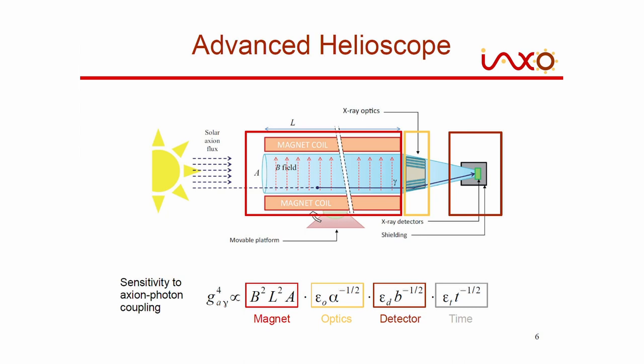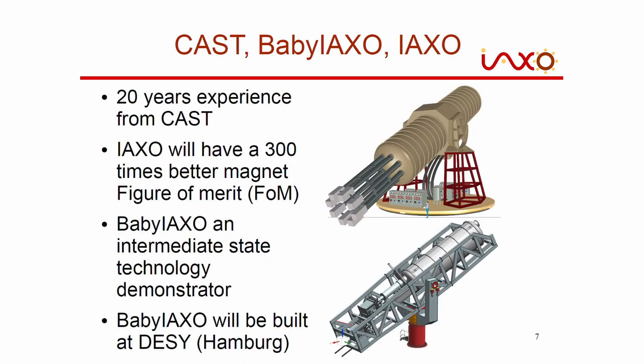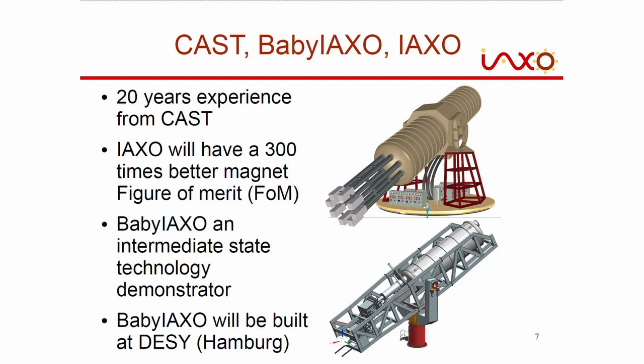Let me give an overview of how we progressed from CAST - where we had about 20 years of experience with helioscopes - to Baby IAXO and IAXO. After CAST was very successfully used to look for axions, we thought about how to make it better and bigger. We invented IAXO, which has a very big 20-meter-long magnet with eight bores, allowing eight experiments simultaneously with a movement structure that can point to the sun for about half the day. Since this is a very large experiment, we decided to build a technology demonstrator first - one also capable of producing new physics - and that is how Baby IAXO was conceived.